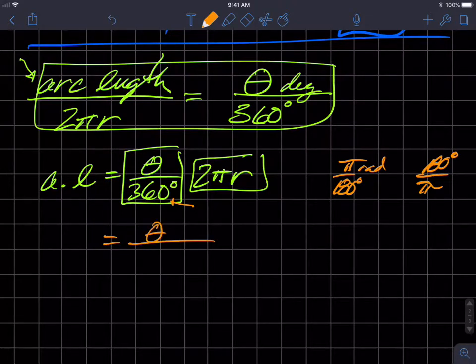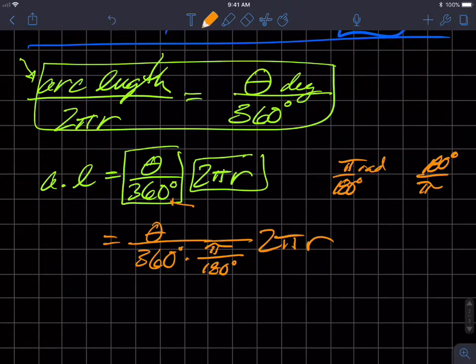We're going to take θ and we're going to take 360, but we're going to multiply 360 by π over 180.